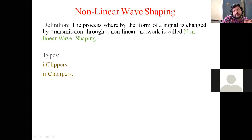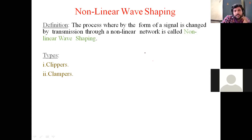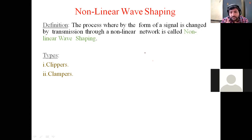A nonlinear network contains those three passive components along with nonlinear elements such as diodes and transistors. We use these components in a circuit, apply an input, and the output we get is a changed output — the form of the output signal is changed.